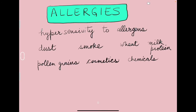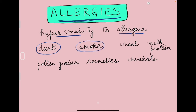Some very common, very prevalent disorders are called allergies. What is an allergy? It is the hypersensitivity of a person to certain allergens. It could be a dust particle, smoke, wheat protein, milk protein, pollen grains, cosmetics, makeup items, or chemicals — these could be the allergens for certain individuals. Not all suffer from allergies; only a few people are hypersensitive to certain allergens or chemicals.